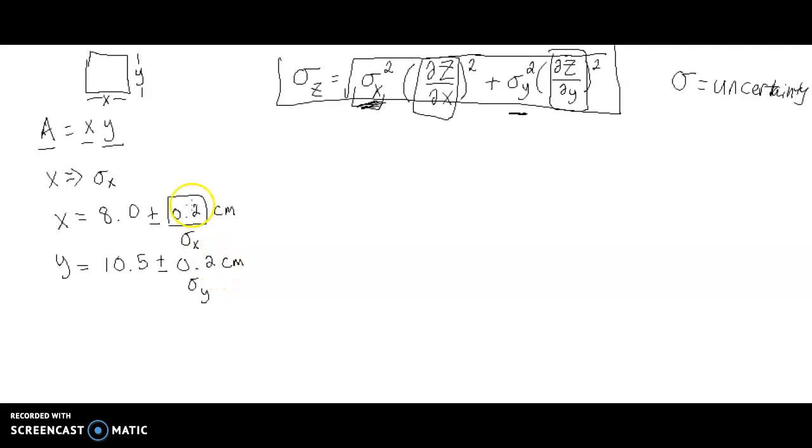Okay, so we can calculate what the area is. We can calculate the area. That's just going to be 8 times 10.5, which, if I'm not mistaken, is 84. So the area should be 84 square centimeters. But what about this plus minus business?